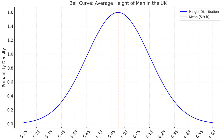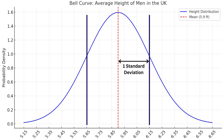To get the bell curve we need to know the standard deviation. The standard deviation of this graph is 0.25 feet, or a quarter of a foot. Applying the standard deviation to the probability density, from the center line of 5.9 feet, within one standard deviation the height range goes from 5.65 feet to 6.15 feet. Due to how the math works, a set percentage of people fall within this standard deviation — 68 percent of all men in the UK range from 5.65 feet to 6.15 feet.